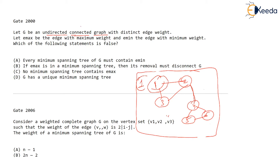So that is what they are saying: what is given to us is an undirected connected graph with distinct edge weights. Check every word properly — distinct edge weights means every weight is distinct, and weights of any of the edges are not repeated.